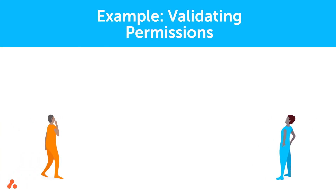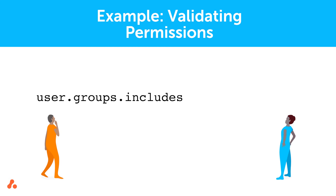Now let's say that Violet also needs to restrict transition permissions so that only HR managers can transition issues to a rejected status. To do this, she starts with the User variable. She specifies the Groups property and uses Includes to indicate that the group should be checked. Then Violet specifies which group to check for by using parentheses and single quotations. For this example, the group name is HRManagement. When the query runs, it will check that the designated user is a part of the HRManagement user group.